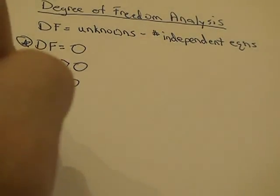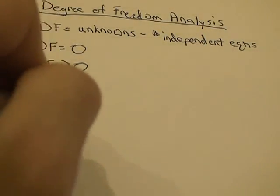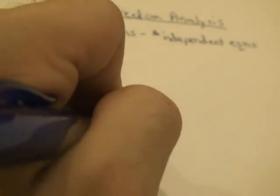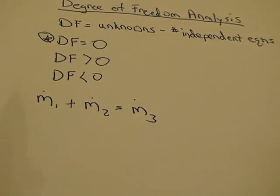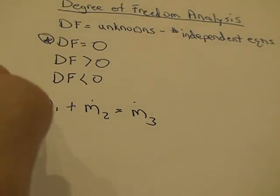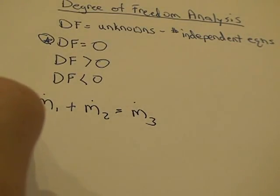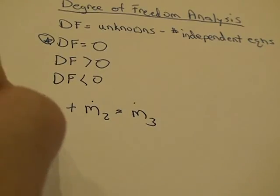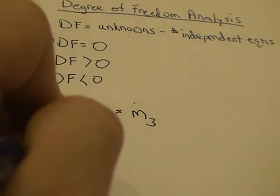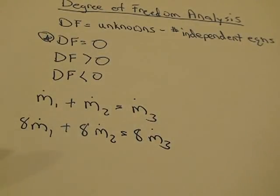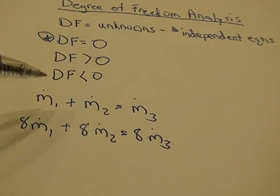For instance, if you have mass flow rate one plus mass flow rate two equals mass flow rate three. Now, if I were to just write our second equation that was, say, eight times mass flow rate one plus eight mass flow rate two equals eight mass flow rate three. Well, these two equations are not independent. Why? Because if I just multiply this first equation, each term by eight, I'll get the second equation.